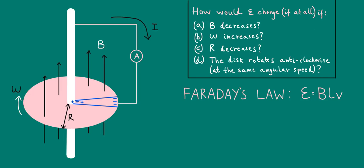For part A, from Faraday's law, we see that induced EMF is proportional to the magnetic flux density B. So as you might expect, if B decreases, the induced EMF will also decrease.